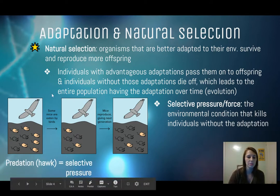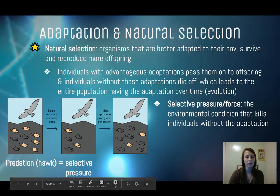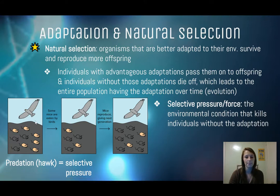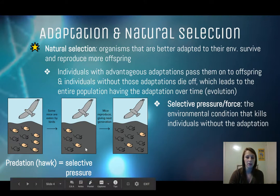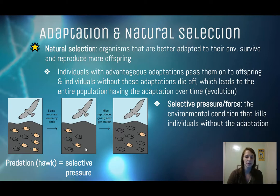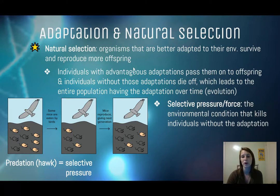In this example, the selective pressure is specifically the hawk, and the color of the ground is the environment — but the hawk is what's pressuring this natural selection to occur.